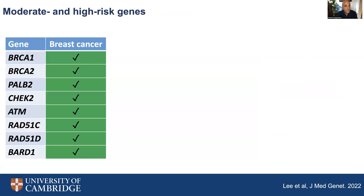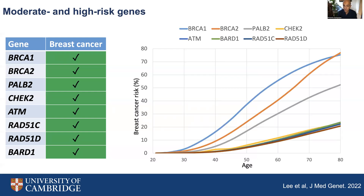Looking at each of these components in more detail, and first at the moderate and high-risk genes included in the model. The model includes the effects of mutations in genes such as BRCA1, BRCA2, and PALB2, which are associated with high risks of developing breast cancer. This graph shows the risks of developing breast cancer by age — these genes are associated with risks of more than 50% by age 80. We also have the effects of mutations in five other genes, associated with risks varying between 21 to 24% by age 80.